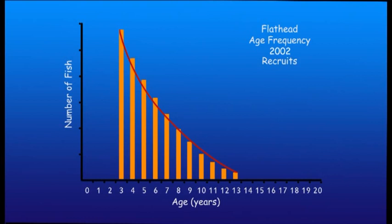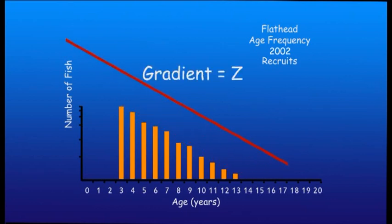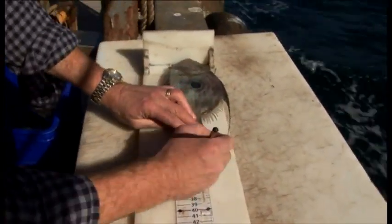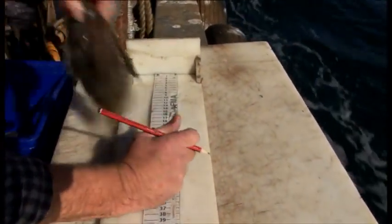What we really want to know is the proportion of the stock dying each year — this is the important figure. This curve can be straightened by squashing down the graph; scientists call this a log transformation. The gradient of this line is the total mortality, or Z. The steeper the line, the higher the mortality rate. Scientists do this with a number of year groups and get an average which represents the mortality for the whole stock. This is a good example of another assumption made for the model: that mortality is the same across a number of different year classes.